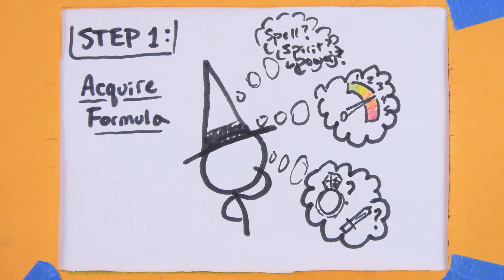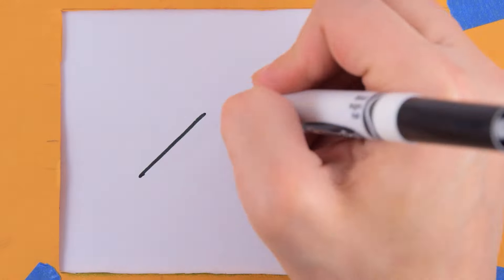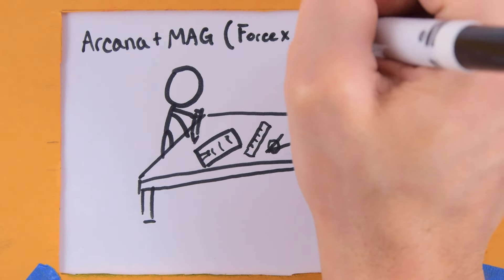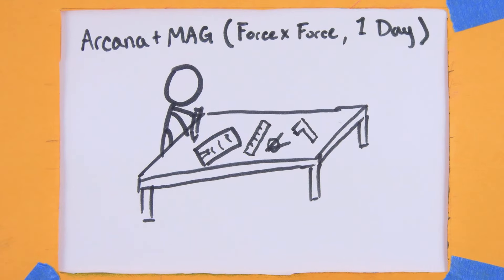The kinds of foci include things like spell focus or power focus. All the different kinds can be found on a table in the SR5 Core Rulebook on page 318. Designing your own formula requires an extended test of arcana plus magic with a threshold of force times force, and it takes one day of work per test.